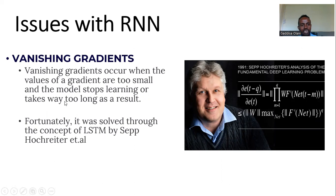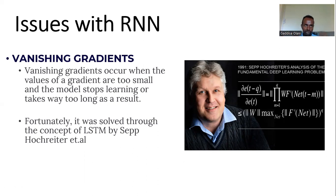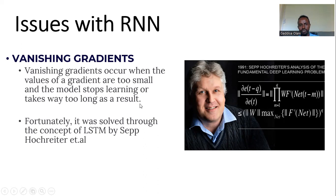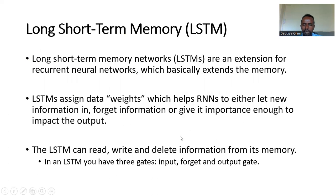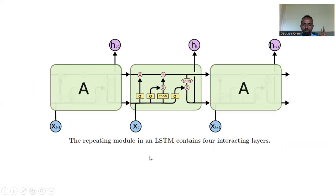The solution to this is selective memorization. This algorithm is called LSTM — Long Short-Term Memory. LSTM is different from the recurrent neural network because it selectively memorizes context. The vanishing gradient problem occurs when the value of a gradient becomes too small and the model stops learning, or takes way too long to learn. LSTM addresses this with gates.